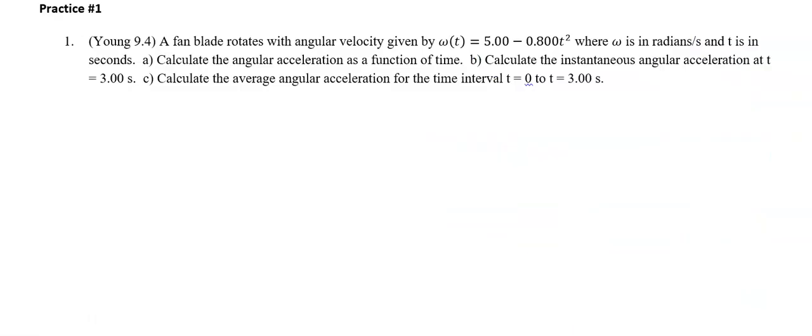I took this problem from one of my favorite textbooks, the Young and Freedman textbook. Let's go ahead and read this problem yourself, try it yourself, and then check back in on the video. So we have a fan blade rotating with angular velocity given by omega(t) = 5 - 0.8t^2, where omega is in radians per second and t is in seconds. Part A, calculate the angular acceleration as a function of time.